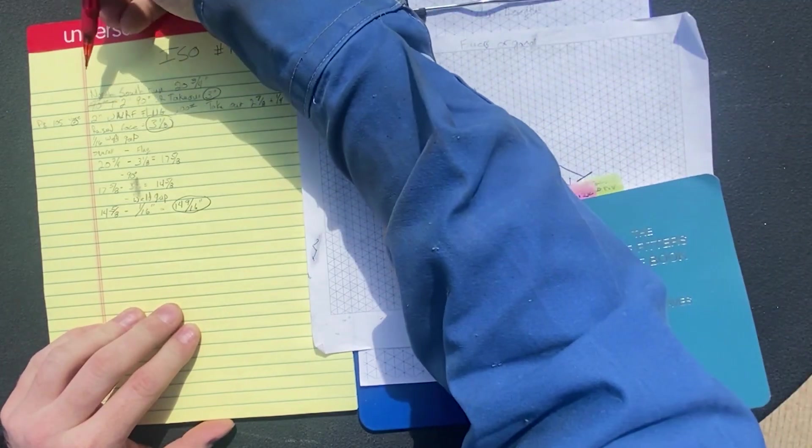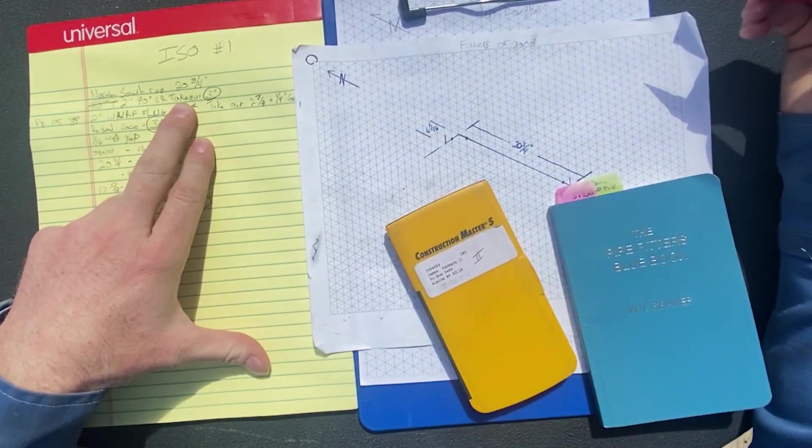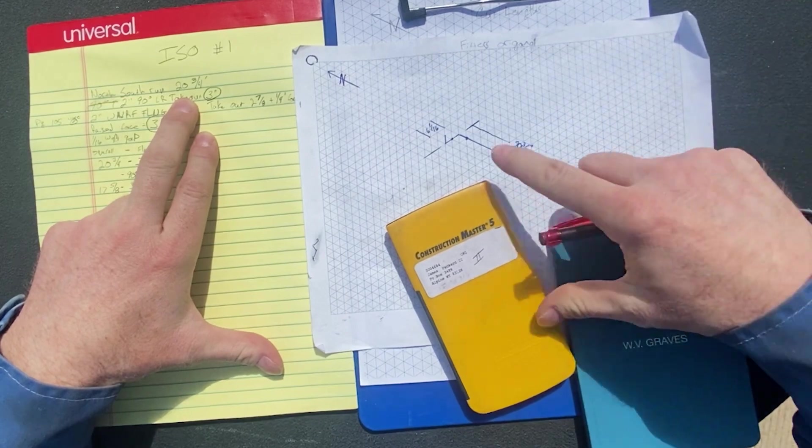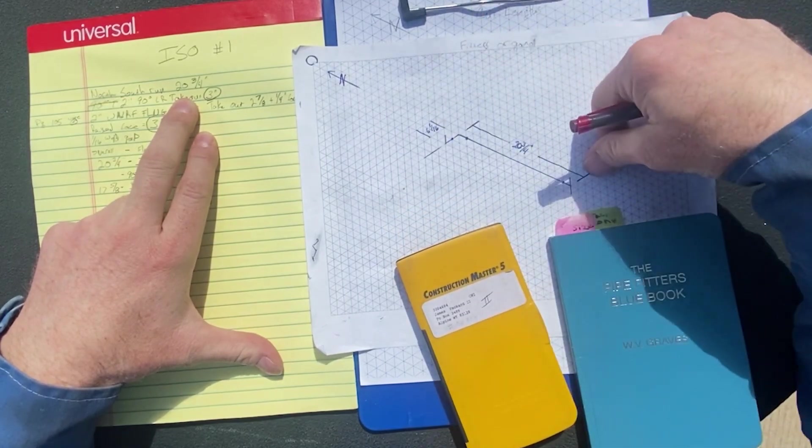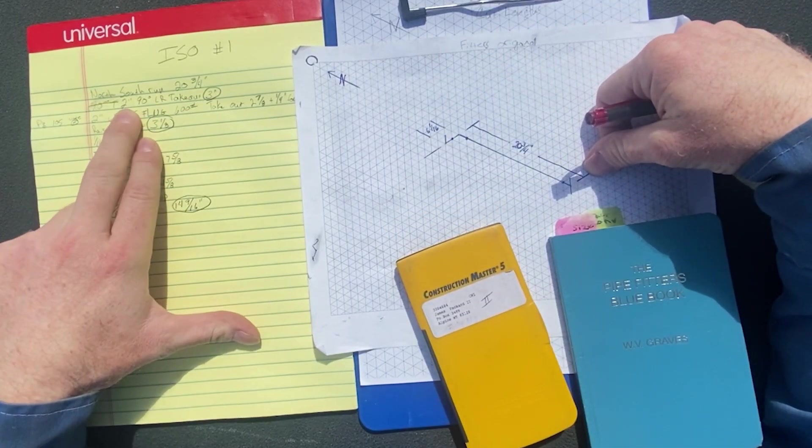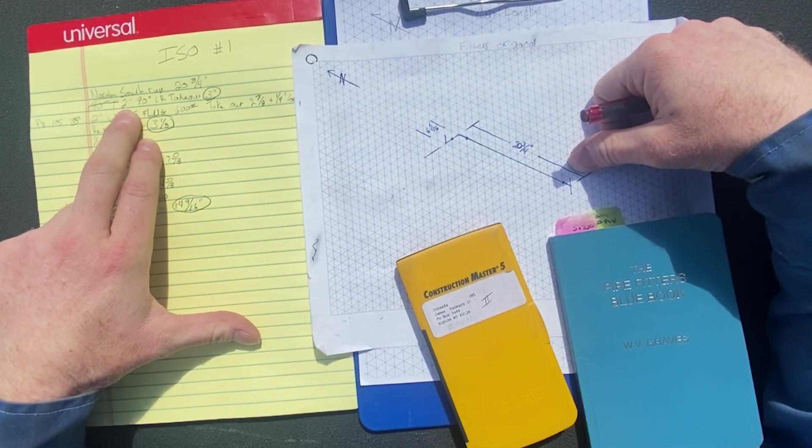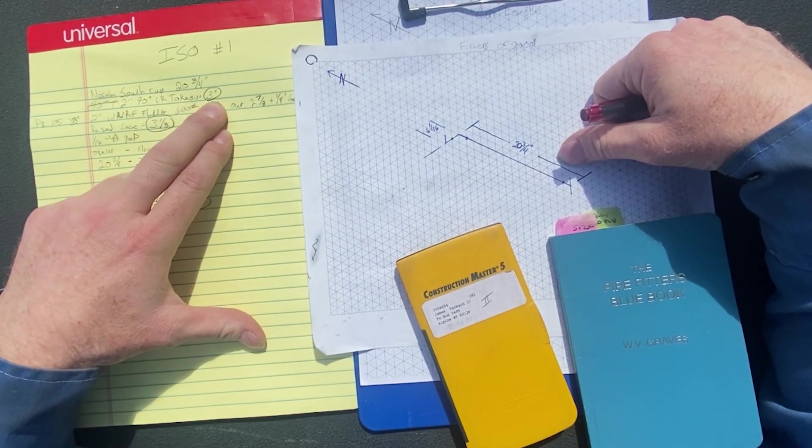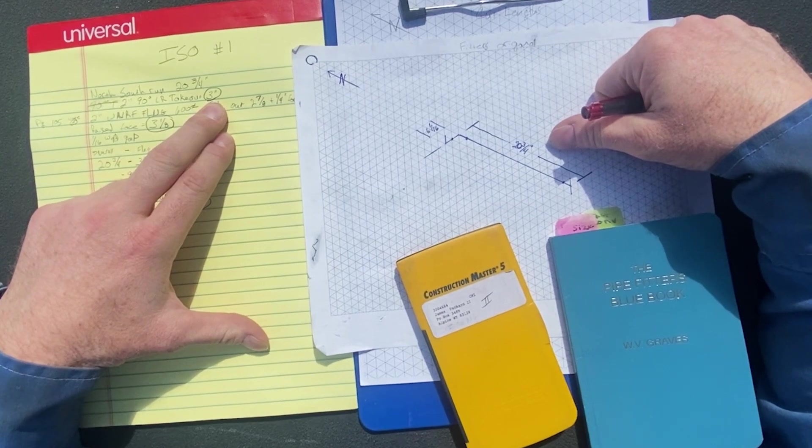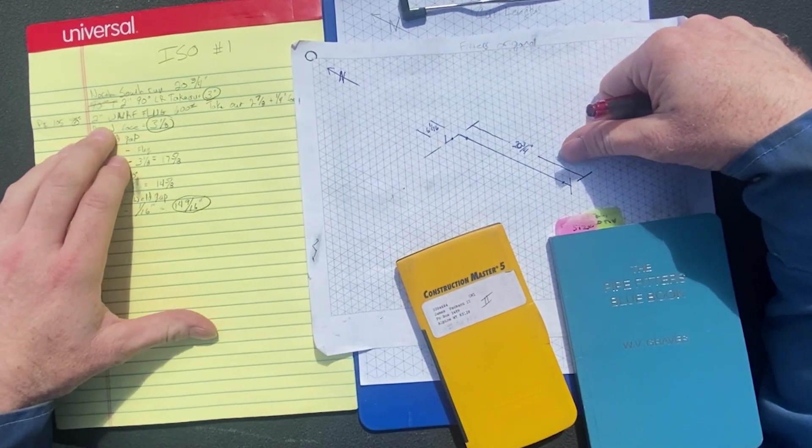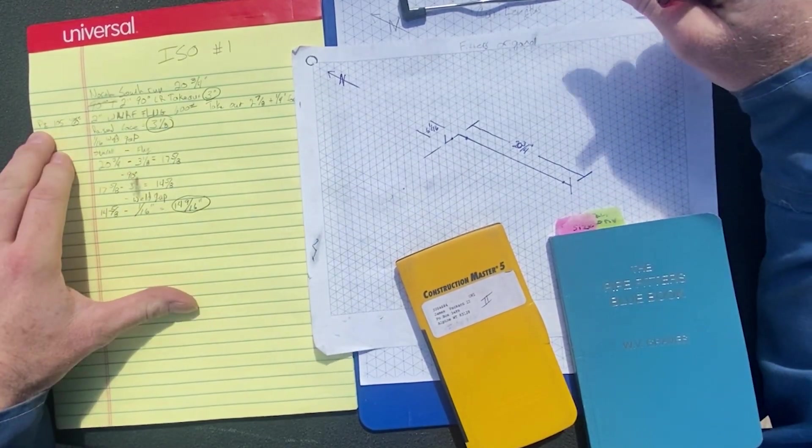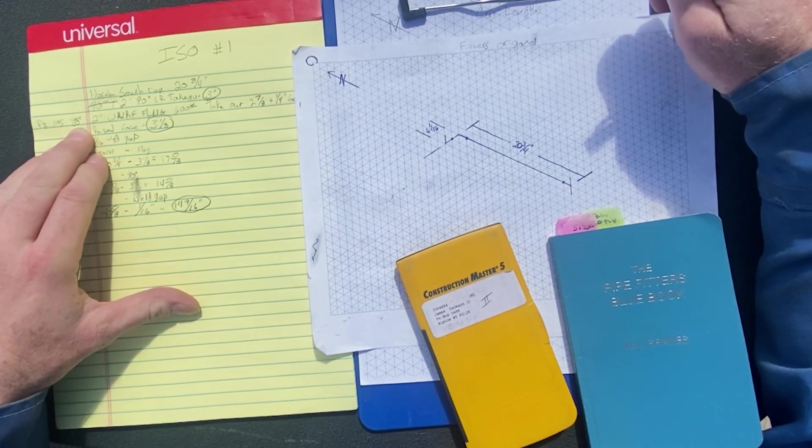So what we ended up doing here is writing out our north run, 20 and three quarters. That's what our ISO dimension is. And I always write down what my 90 degree takeouts are. So a two inch 90 long radius takeout is three inches, generally one and a half times. And that comes right out of the blue book there. And I'll write down a page number sometimes if I need to reference it more than once.